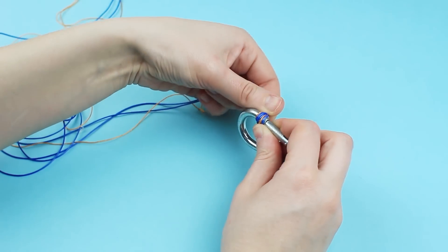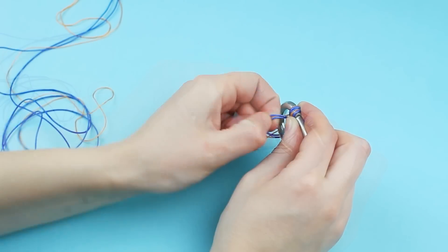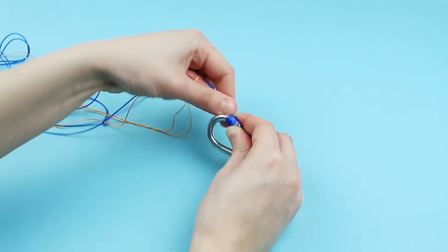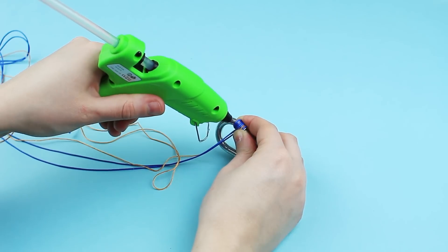Wind the two threads around the carabiner. Make the coils tight. Hot glue as far as needed.